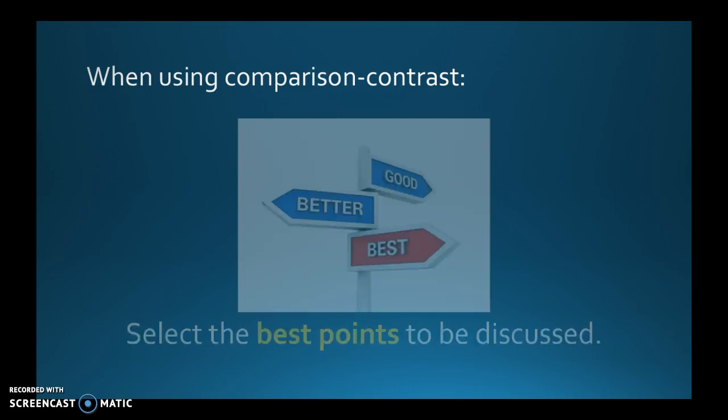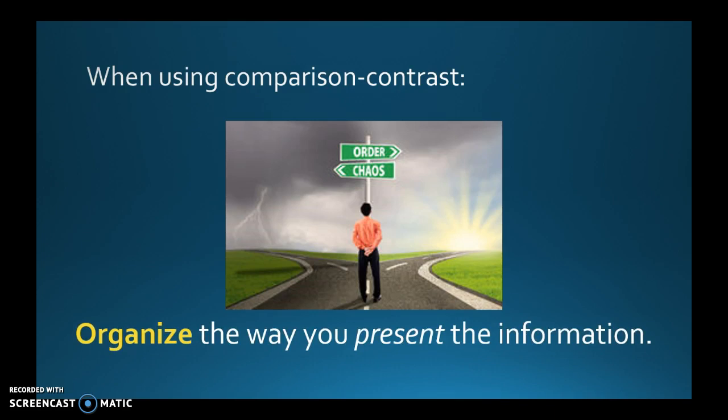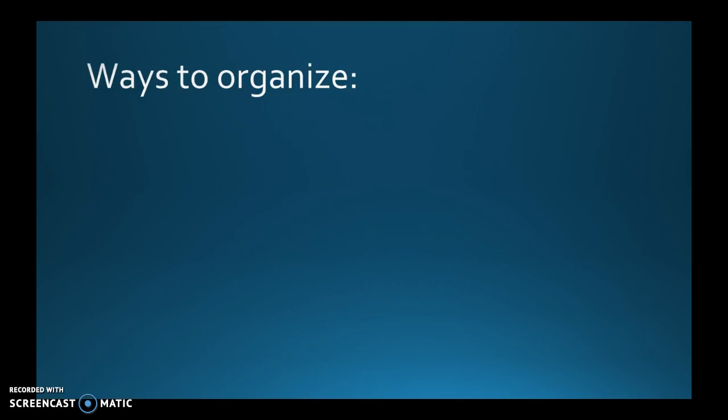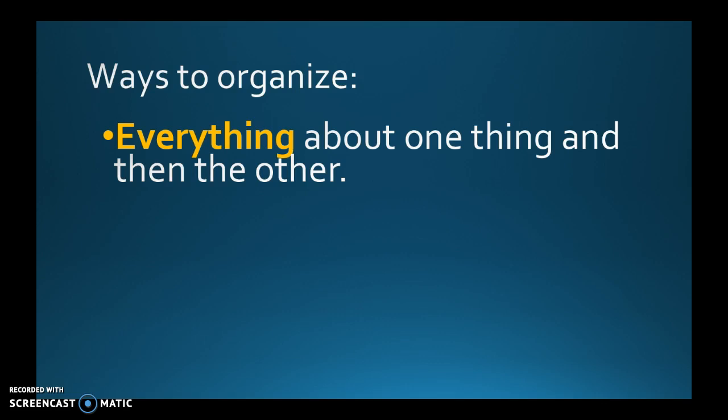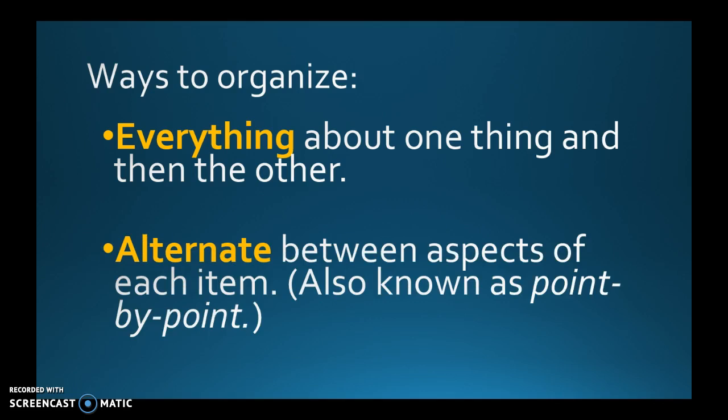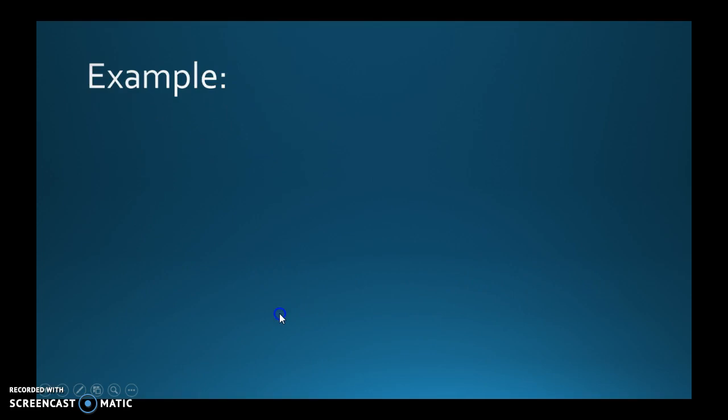You also need to organize the way you present your information. There are two different ways to do it. Basically, you can say everything about one thing and then everything about the other — or you can use the alternative method known as point by point. If comparing apples and oranges, the first method has you tell everything about an apple and then everything about an orange. That's not as good as the point by point method.